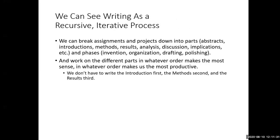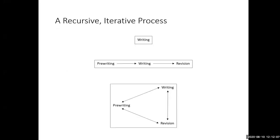We can also see our writing as a recursive, iterative process, which means it happens in a messy way — it goes back and forth with starts and stops. It doesn't just happen in a linear, simple fashion. We can break assignments and projects down into parts and phases, and work on the different parts in whatever order makes us most productive. For example, you don't have to write the introduction first; it's always easier to write your intro last, because then you know what you're introducing. The real writing process is recursive and iterative, not the linear process we all wish it was.